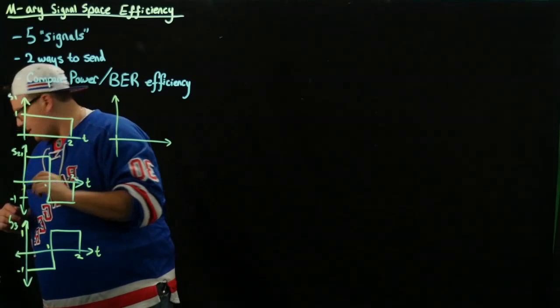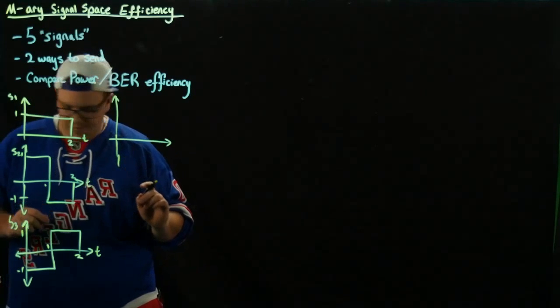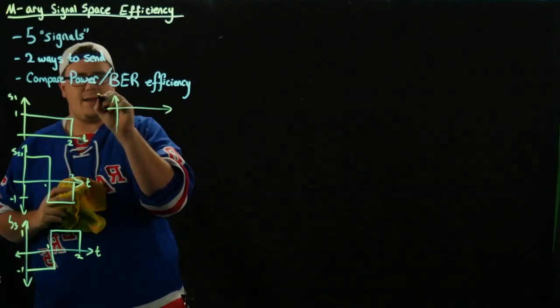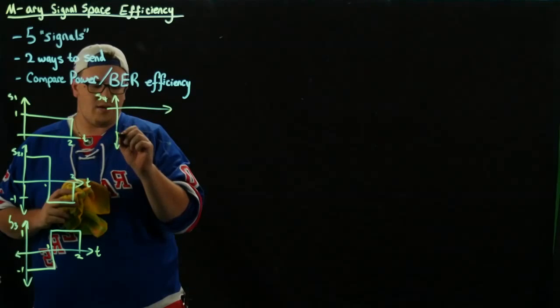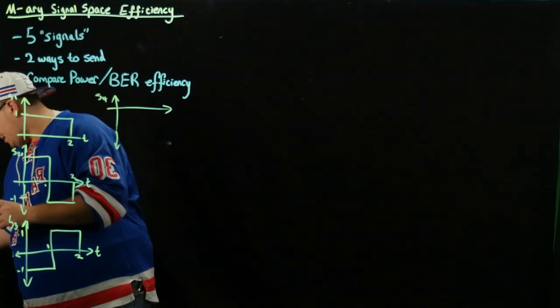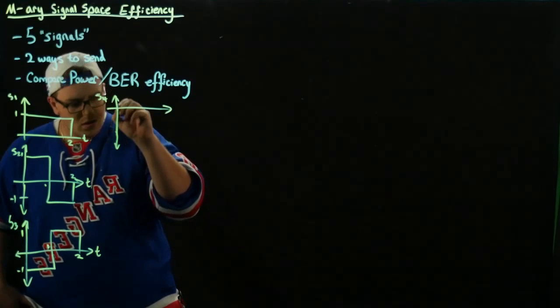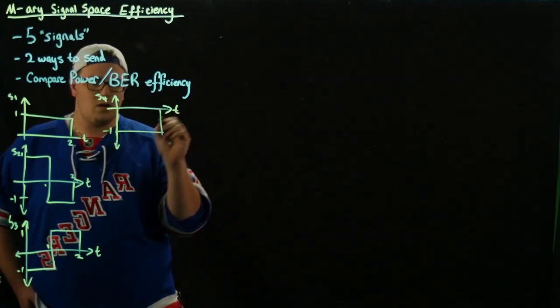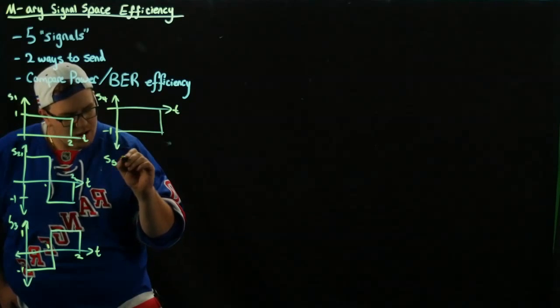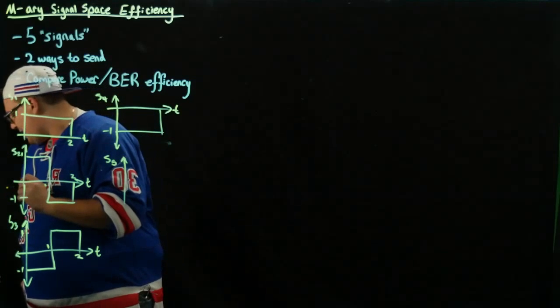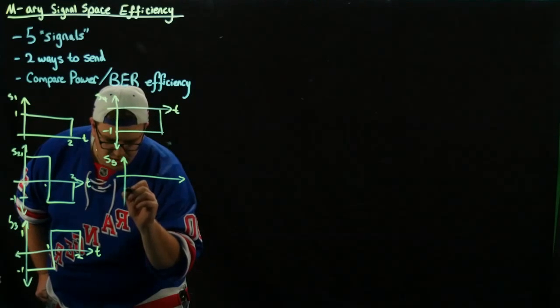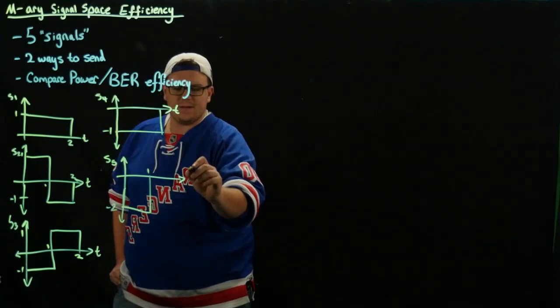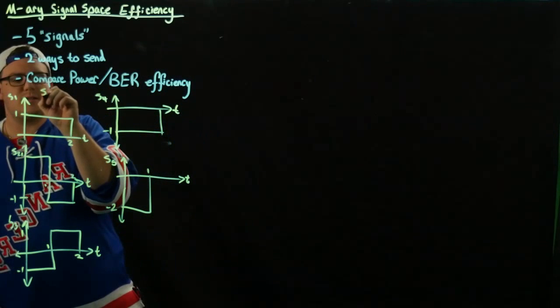The fourth signal is negative two for all time. These are given to you and what we're going to do is we're going to plot them all into signal space. We have here it's negative one for the two seconds. And then signal five is just declared to be negative two for one second as a function of time. So this is our first signal set, signal set one.